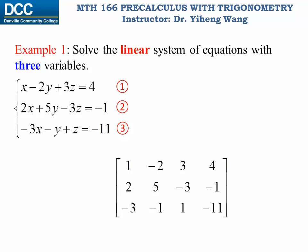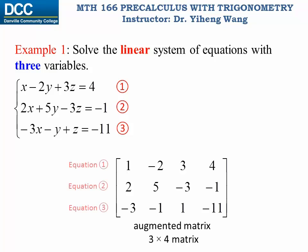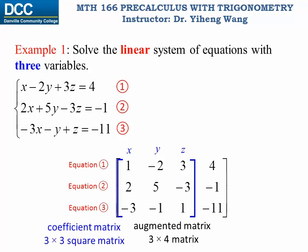Therefore, we organize the coefficients and the constants in this 3 by 4 matrix. This is called the augmented matrix for our original system of equations. Each row represents one equation from the original system, and the first three columns represent the coefficients for the three variables x, y, and z in that order, and the last column represents the constants. This matrix is called an augmented matrix because it can be considered as the combination of two matrices: a 3 by 3 square coefficient matrix that contains all the coefficients for the variables, and a 3 by 1 column matrix that contains all the constants.